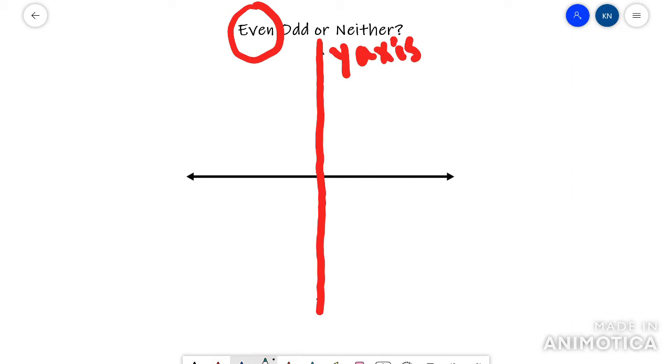You could have sometimes weird ones like a W, that would be an even function, or it could be an upside down quadratic.